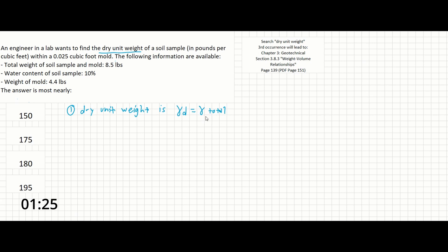So in order to solve this problem for gamma d, we first need to find gamma total. Our second step here is going to be to find the weight of the soil sample only.